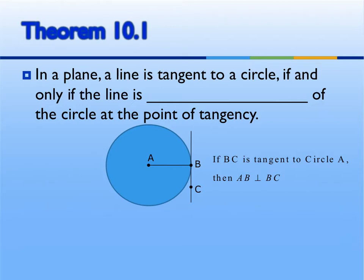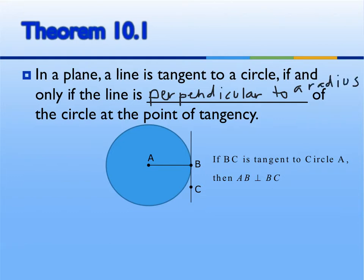Next we have our first theorem. In a plane, a line is tangent to a circle if and only if the line is perpendicular to a radius of the circle at the point of tangency. So here we have our radius AB, and our line that's tangent would be BC. These two lines would be perpendicular. So if BC is tangent to circle A, then AB is perpendicular to BC — meaning that this is a 90 degree angle.